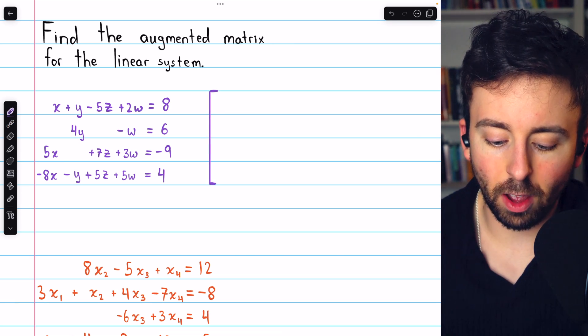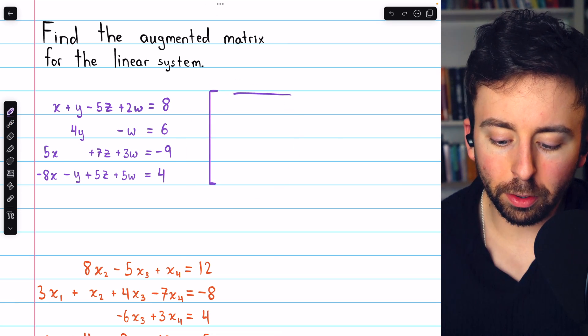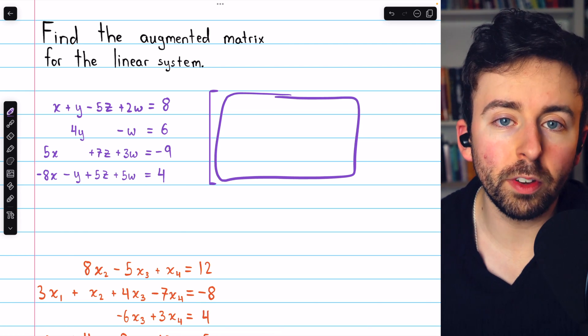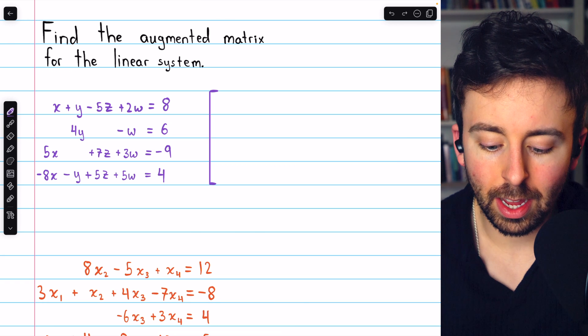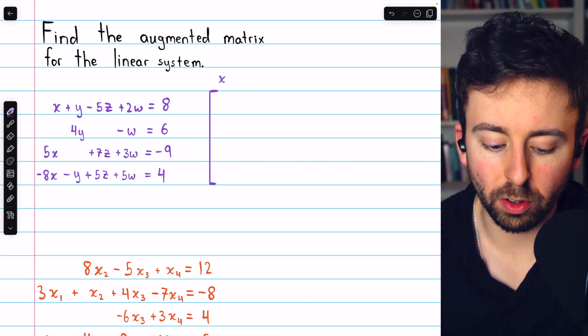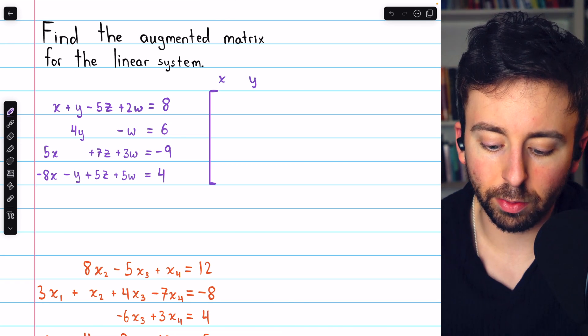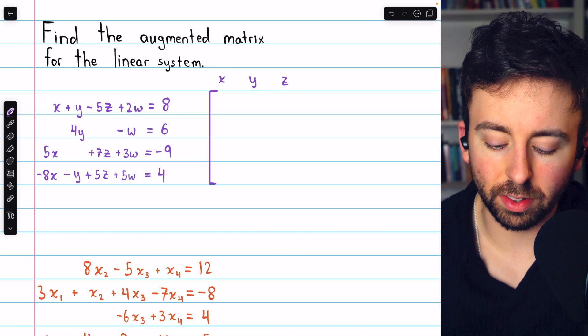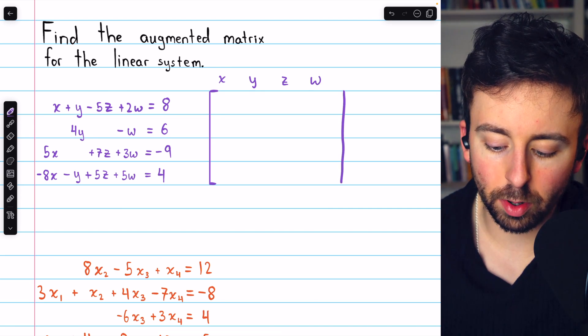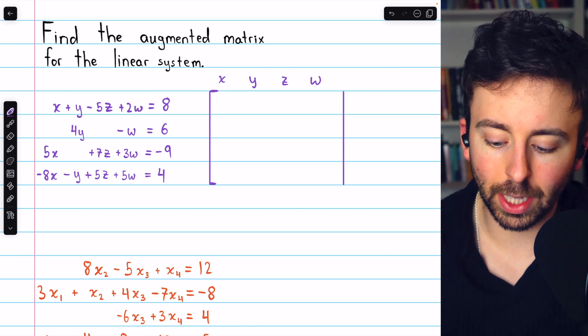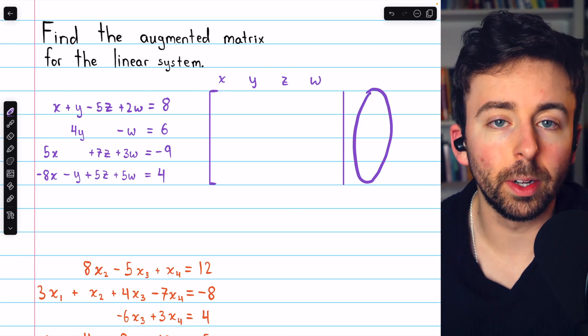So starting to set this augmented matrix up, the first part of the augmented matrix is the coefficient matrix, just storing the information about the coefficients. In the first column, we'll put the coefficients of x, then the coefficients of y, then the coefficients of z, and then the coefficients of w. It's at that part where the augmented matrix is split, and the constants are put over there.